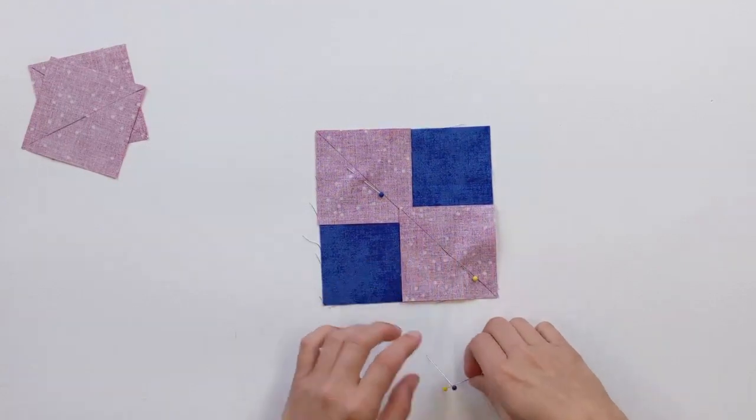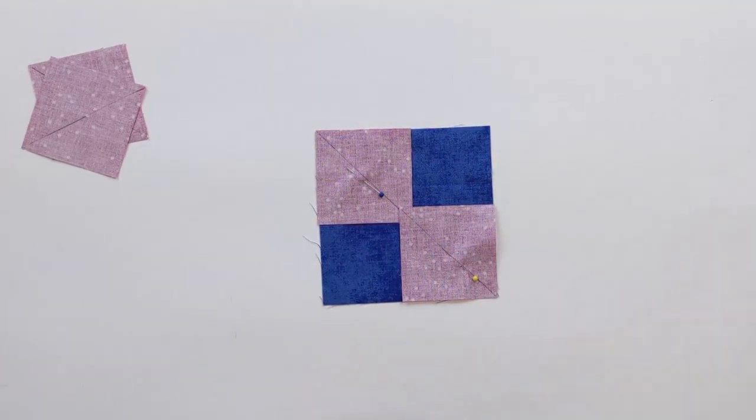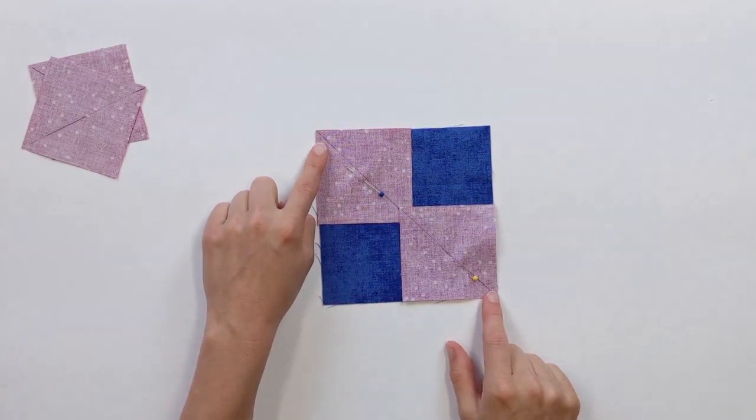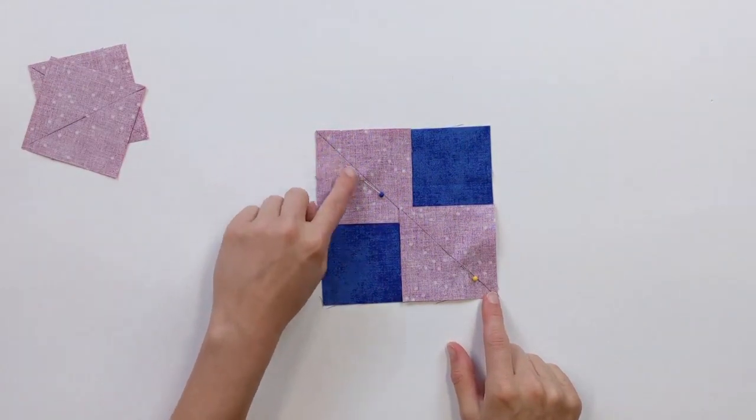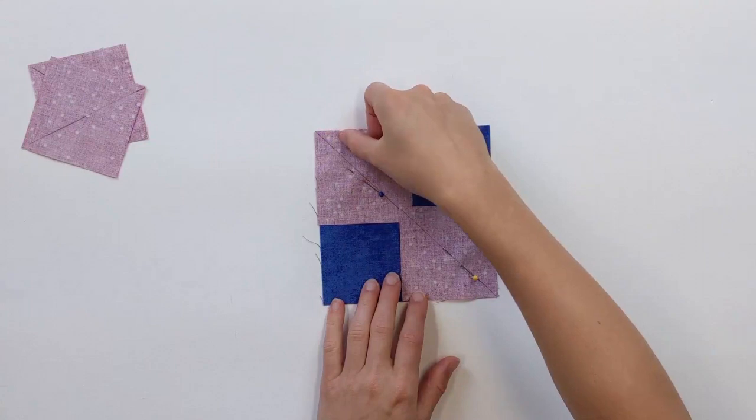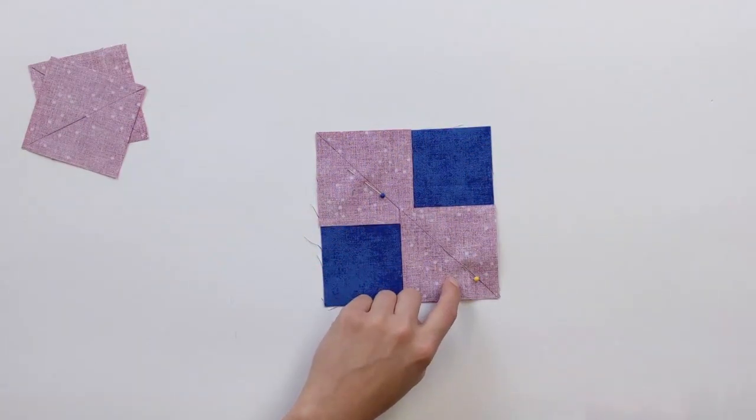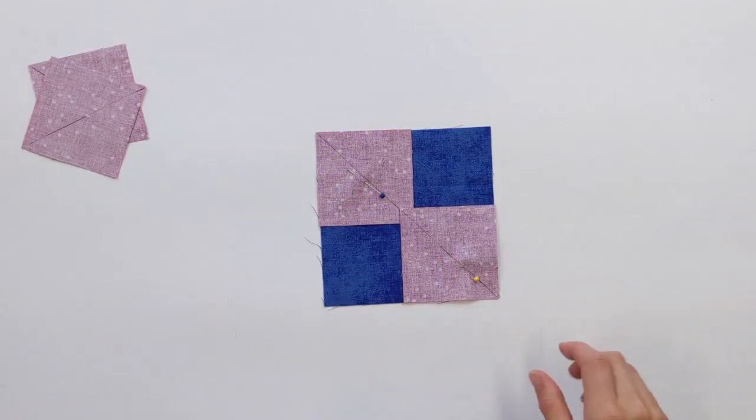You can go ahead and put a couple pins if you want to keep things staying in the spot that you want them to stay as you go to the sewing machine. We are going to sew a quarter of an inch seam away from the line on both sides. So here's our line here. We're going to sew a line a quarter of an inch away on this side, and a quarter of an inch away on this side. So we're going to go over to our sewing machine, and we're going to get that done.